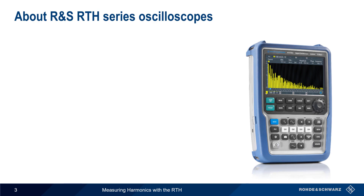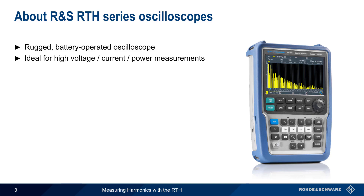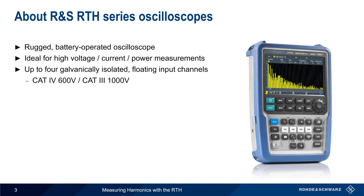Let's start with a brief overview of Rohde & Schwarz RTH Series Oscilloscopes. The RTH is a rugged, battery-powered, general-purpose oscilloscope that also has numerous features and functions that make it ideal for measurements of high voltage, high current, or high power. The scope inputs are all galvanically isolated and floating, with protection of up to 600 volts for Cat4 and 1,000 volts for Cat3. The RTH also offers an offset range of up to 200 volts.